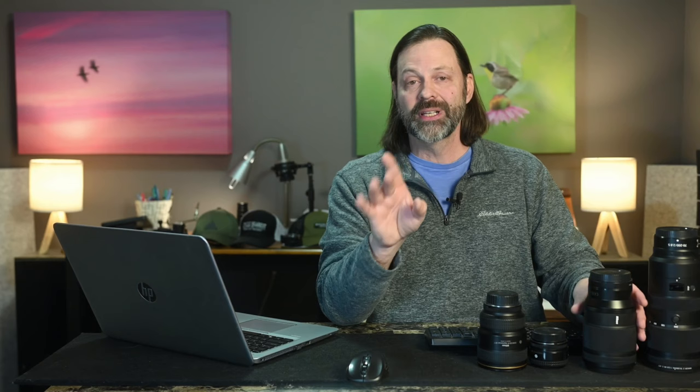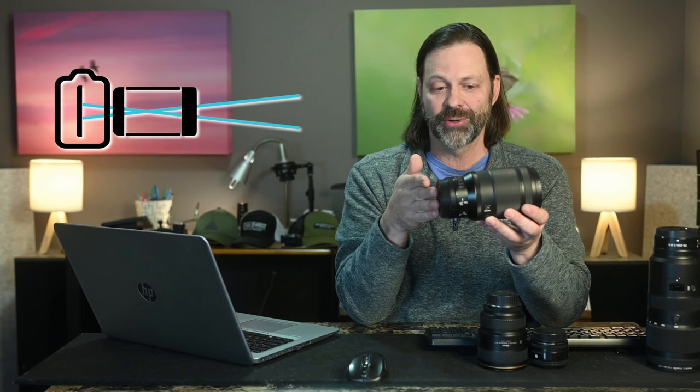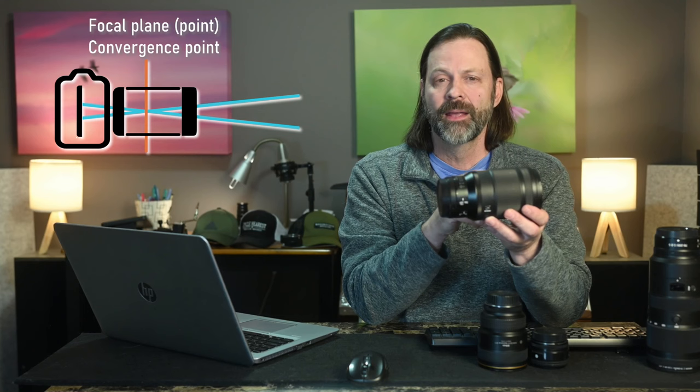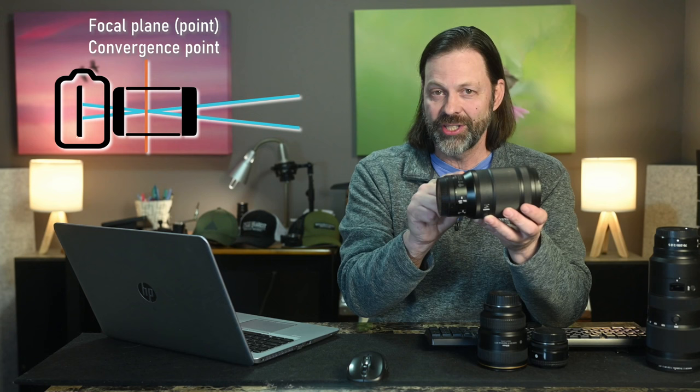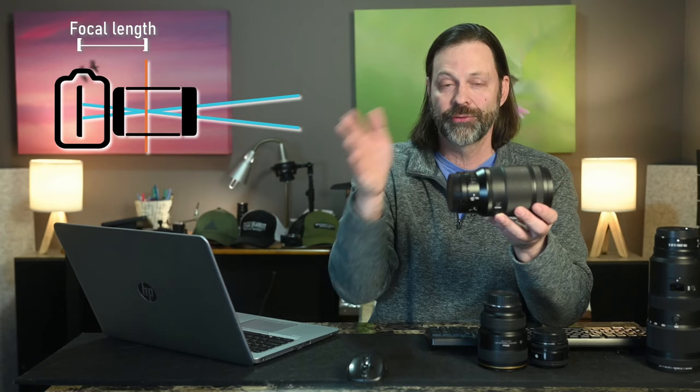Here's how focal length is really determined. Focal length is determined by the area that light converges in the lens. The physical middle of the lens might be right here, but that doesn't mean that's where the light converges. The optical center of the lens might be somewhere back in here, or it could actually be in the front. The distance from that optical center — that area where light converges to one point in the lens — to the sensor determines focal length. It's slightly related to size; generally speaking, larger lenses will have larger focal lengths, but not always.